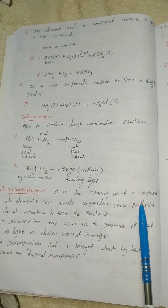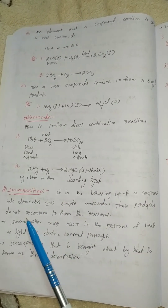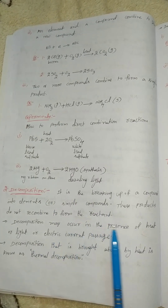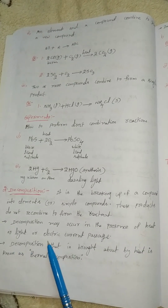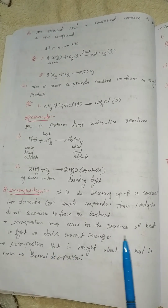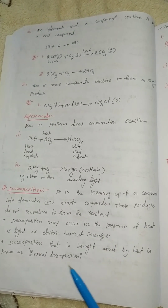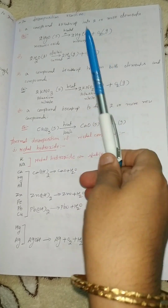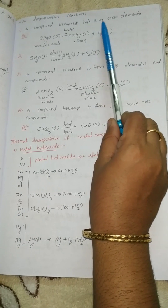Next one: decomposition. This is the breaking of a compound into elements or simple compounds. These products do not recombine to form the reactant. Decomposition may occur in the presence of heat, light, or electric current. Decomposition brought about by heat is known as thermal decomposition. In a decomposition reaction, a compound breaks up into 2 or more elements.